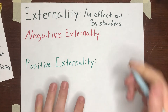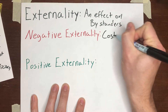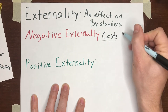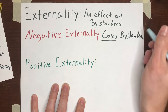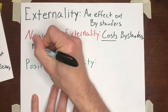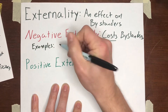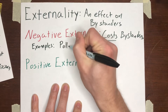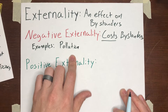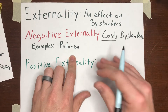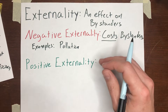A negative externality is when a good imposes a cost — it costs bystanders. Some examples of this would be pollution. That's sort of the canonical example of a negative externality. In-N-Out, when they produce their hamburgers, they're not having any big negative effects on their neighbors.